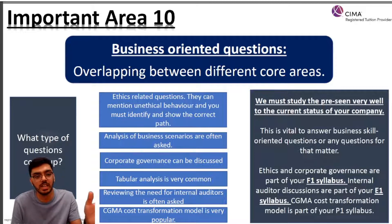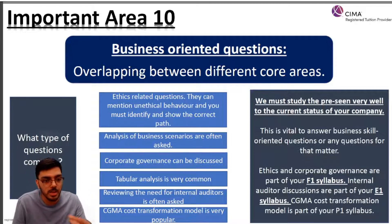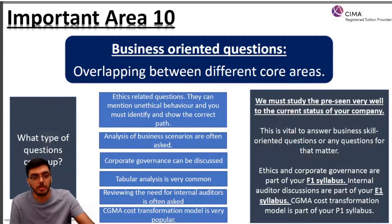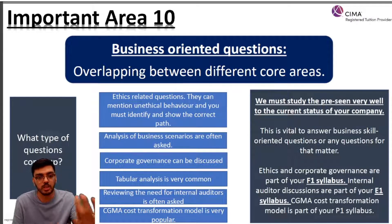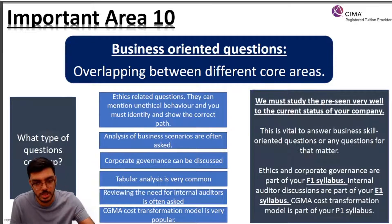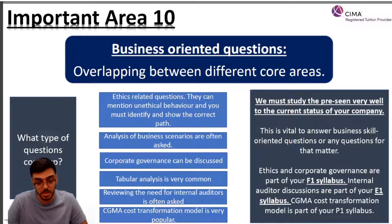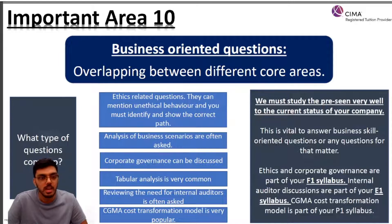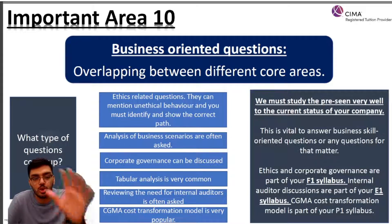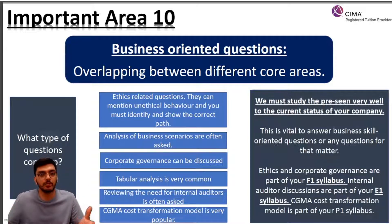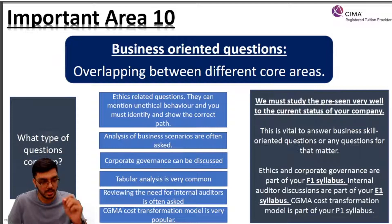Ethics and corporate governance are part of your F1 syllabus; what internal auditors do is part of your E1 syllabus; and the Cost Transformation Model is part of your P1 syllabus. Throughout this video we've tried to summarize important areas and key issues which come up in the exam — things students must know before entering the exam. I hope you found this video helpful. If you have any other questions, please reach out. Thank you for your time and for being here.